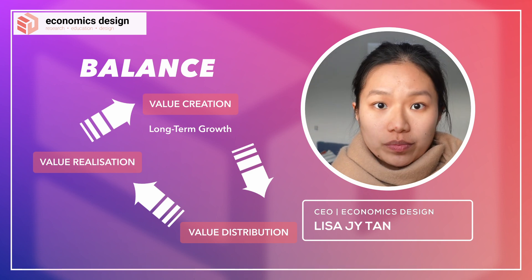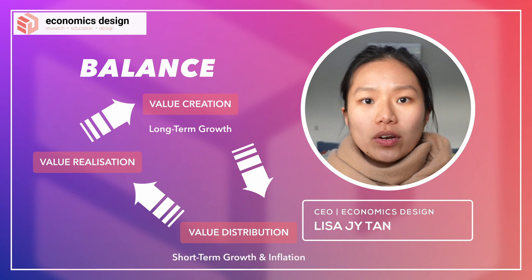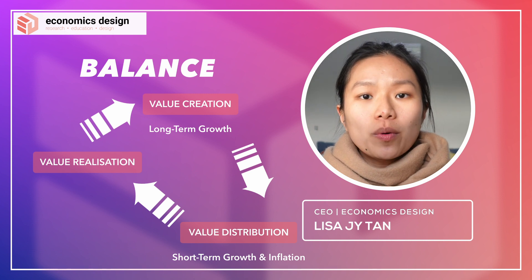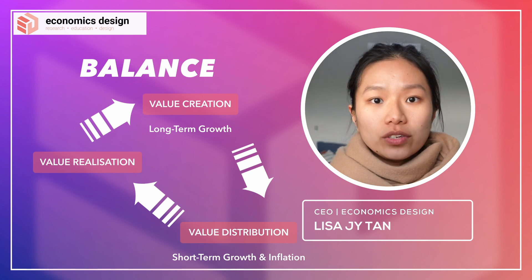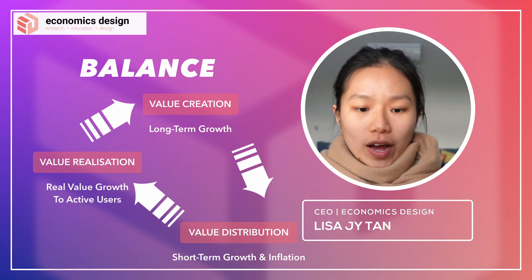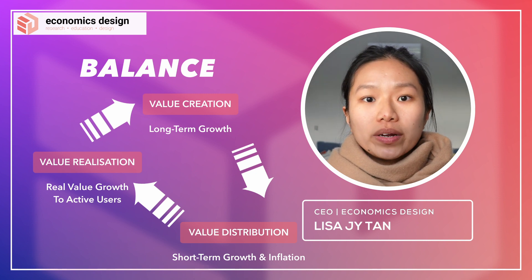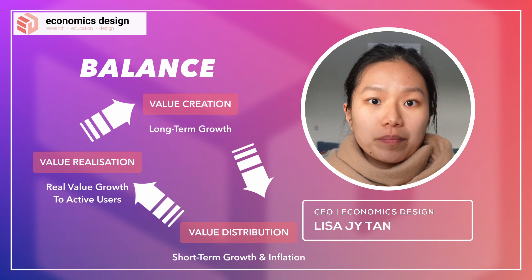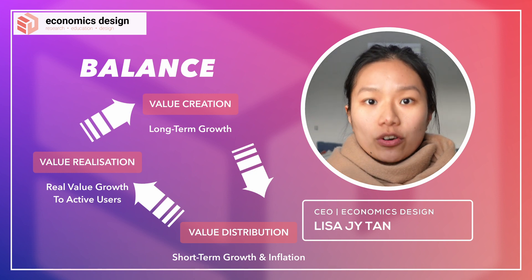The second thing is value distribution, which is the next step and is a bit more immediate — this is where we look at short-term growth, inflation, and general metrics that signify your ecosystem is growing. And value realization involves the concept of nominal value versus real value. What we want to do is figure out the real value accrued to the different active users in the ecosystem. When enough capital has been accrued, it can continuously create additional value.